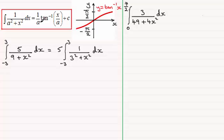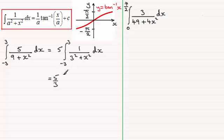This integral is going to be 1 over a, and a would be 3. So we're going to have 1 third times the inverse tan of x over 3. Pulling the 1 third out to the front with the 5, we end up with 5 thirds times the inverse tan of x over 3. Then putting the limits in, the limits go between minus 3 and 3.